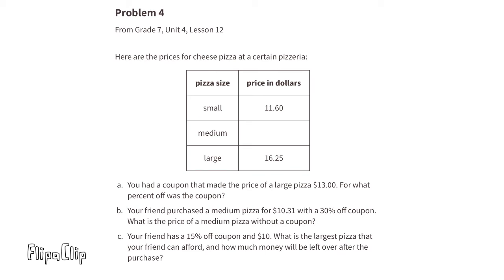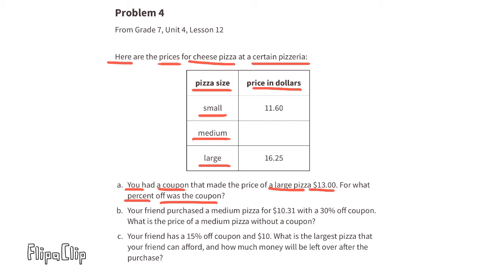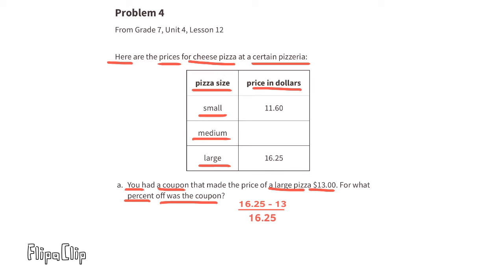Problem number four, from 7th grade Unit 4 Lesson 12 — cheese pizza prices at a certain pizzeria. Part a: if a coupon made the price of a large pizza $13, what percent off was the coupon? The regular price is $16.25. Subtract $13 and the coupon saves $3.25. Then $3.25 divided by $16.25 equals 0.20, so the coupon saved 20 percent.